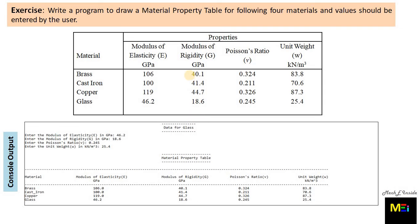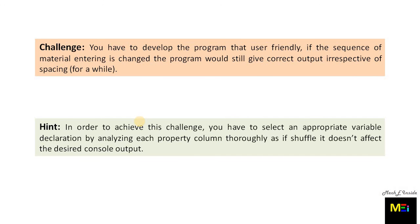Now for the main exercise: write a program to draw a material property table for four materials, with values entered by the user. The console output is shown for reference. The challenge is to develop the program so that even if the sequence of material entry is changed, the program still gives correct output. Hint: select appropriate variable declarations by analyzing each property column thoroughly, so that shuffling the order does not affect the desired console output. All the best for your exercise.